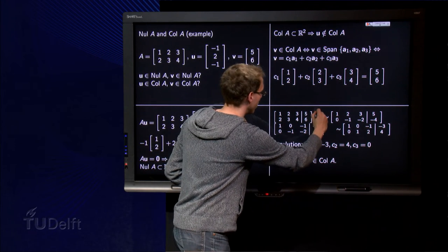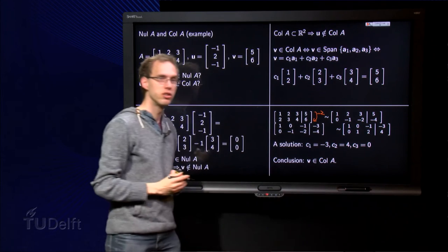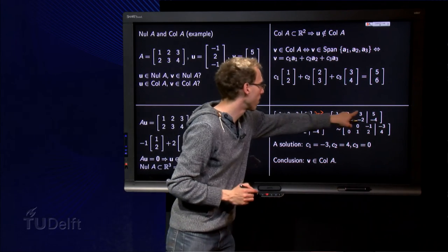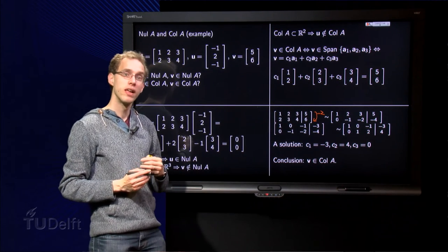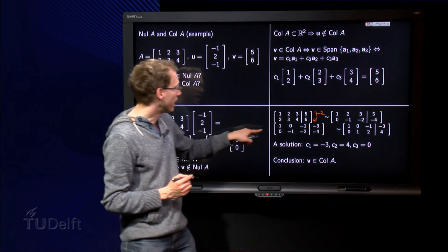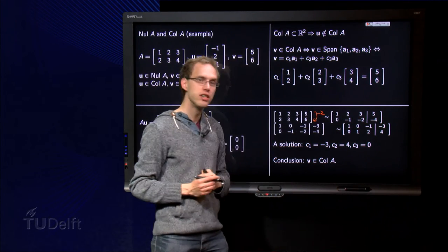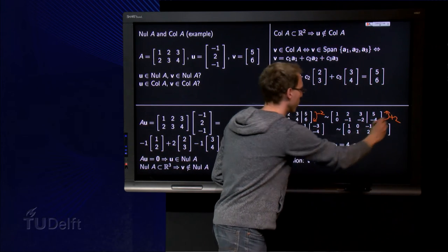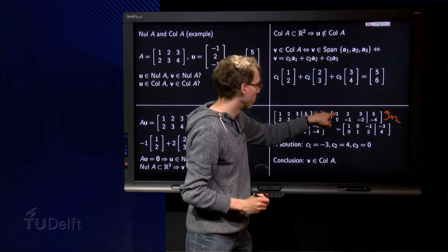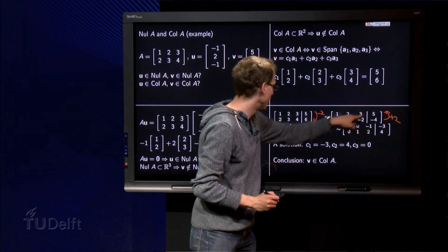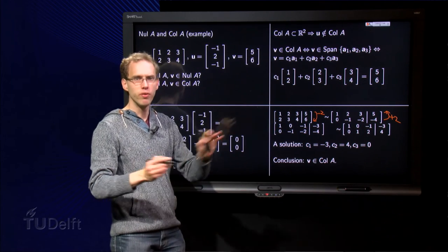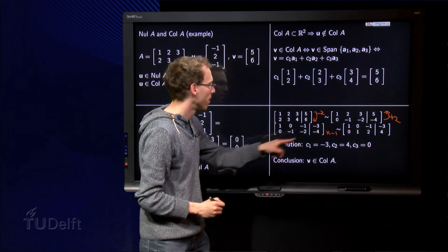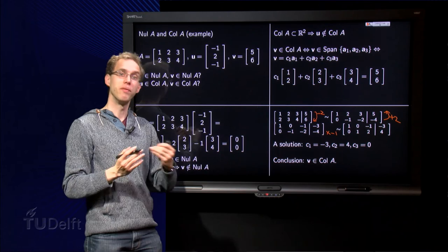So, subtract the first row twice from the second row. We get 0, a minus 1, a minus 2 and a minus 4 as the second row, and the first row remains the same. And then we can add the second row twice to the first row to go to a reduced echelon form. The second row stays the same, and here we get a 1, 0, minus 1, minus 3 over here. Well, let's go all the way to reduced echelon form by doing times minus 1. And there we have the reduced echelon form, and we can find the solution.